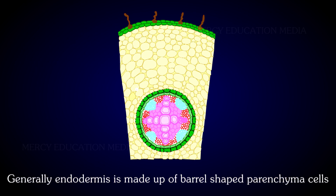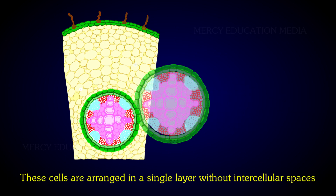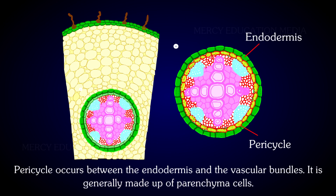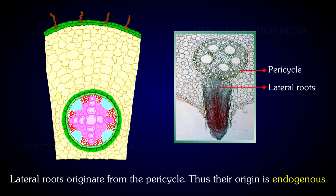The innermost layer of the cortex is called endodermis. Generally, endodermis is made up of barrel-shaped parenchyma cells arranged in a single layer without intercellular spaces. Pericycle occurs between the endodermis and the vascular bundles and is generally made up of parenchyma cells. Lateral roots originate from the pericycle; thus, their origin is endogenous.